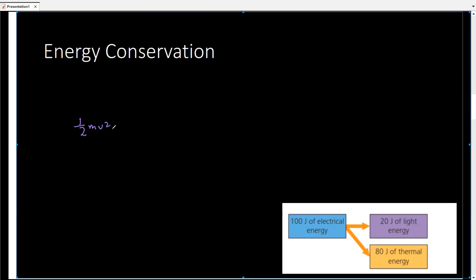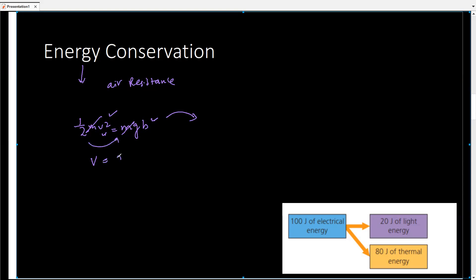The formula for energy conservation deals with kinetic and potential energy: ½mv² = mgh. Using this formula when there is no air resistance, the examiner could ask us to find velocity or height. If asked for velocity, mass cancels out on both sides, so we take the square root. If asked for height, we rearrange to get h = v²/2g.